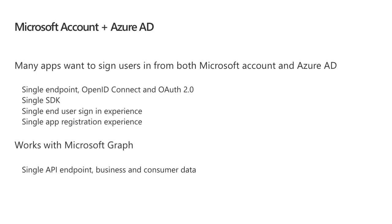The v2 converged endpoint is a single endpoint that supports both OpenID Connect and OAuth. It provides a single SDK instead of two different SDKs, a single end-user sign-in experience, a single app registration experience, and it works with the Microsoft Graph — giving you a single API endpoint to get both business data from Office 365 or consumer data from things like OneDrive consumer or Outlook.com.